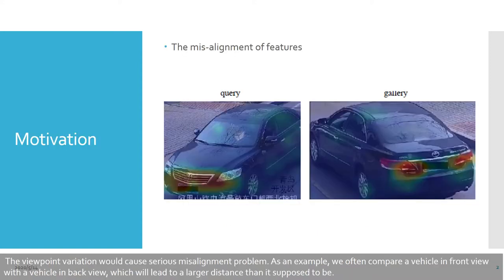The viewpoint variation would cause a serious misalignment problem. As an example, we often compare a vehicle's front wheel with a vehicle's back wheel, which will lead to a larger distance than it is supposed to be.